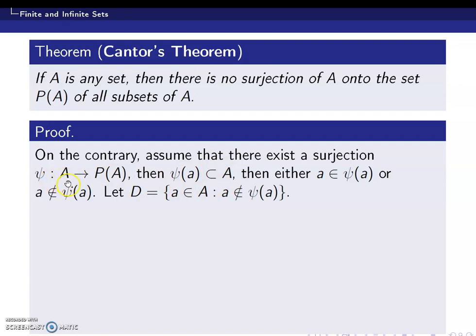Corresponding to each element in capital A, we get ψ(a). Since ψ is a surjection, ψ(a) should be an element of P(A), which means ψ(a) is a subset of capital A. Since ψ(a) is a subset of capital A and a is an element of capital A, there are two possible cases: either the element a belongs to the subset ψ(a), or a does not belong to the subset ψ(a).